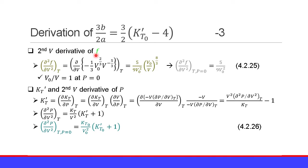The second partial derivative of finite strain f with respect to volume V at T and P = 0 equals 5 over 9V0 squared, evaluated at V0/V = 1. So the second derivative of finite strain f with respect to volume at T and P = 0 is 5/(9V0 squared).